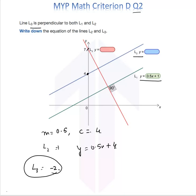And it meets the y-axis at 7, so the y-intercept C is 7. Therefore, the equation for line L3 is y equals negative 2x plus 7.